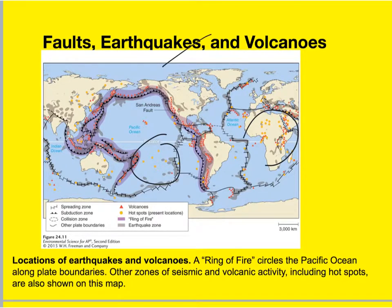In 2008, a magnitude 7.9 earthquake in the southwest region near China killed more than 69,000 people. The epicenter was near a populated area where many buildings were probably not built to withstand such large earthquakes. And in 2010, a magnitude 7.0 earthquake in Haiti killed more than 200,000 people, and many of the victims were trapped underneath collapsed buildings.